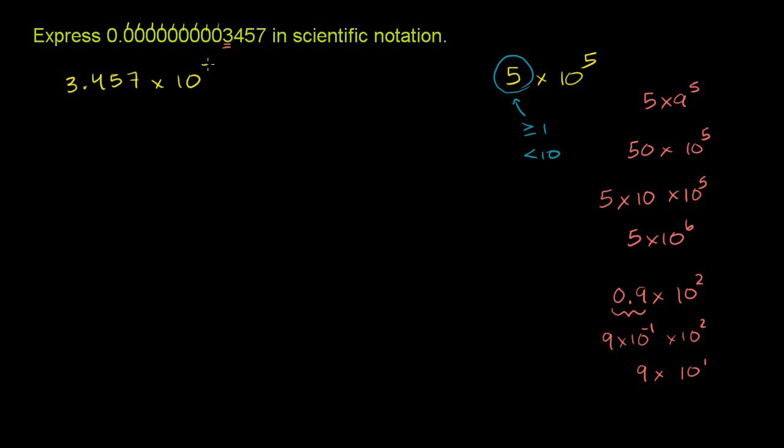So times 10 to the negative 10 power. And the reason why this makes sense is when you multiply something to a negative power, you shift the decimal over to the left. So you're going to have to shift—this is essentially saying, let me write it this way: start with 3.457. Start with 3.457. And when you multiply it times 10 to the negative 10, you're going to shift the decimal to the left 10 spaces.